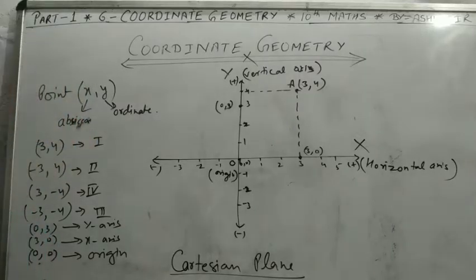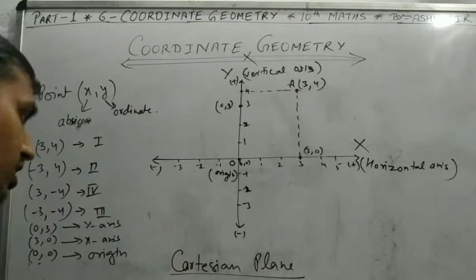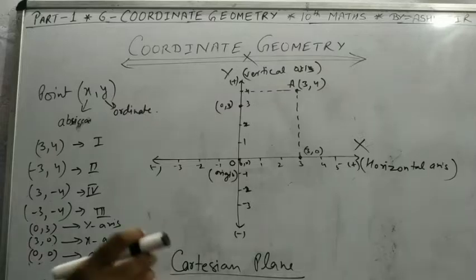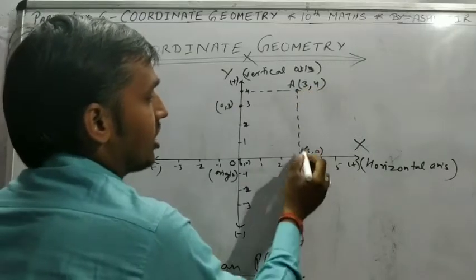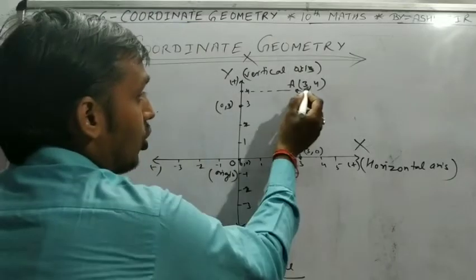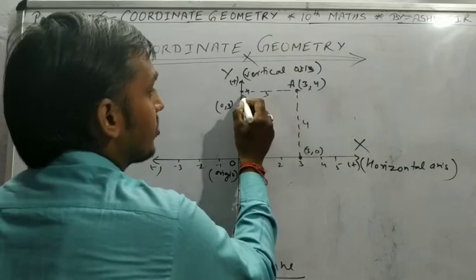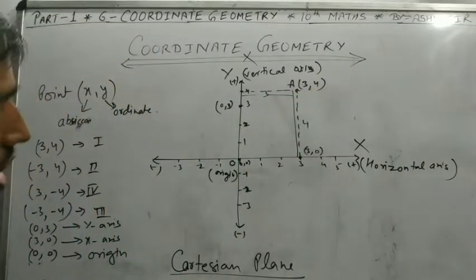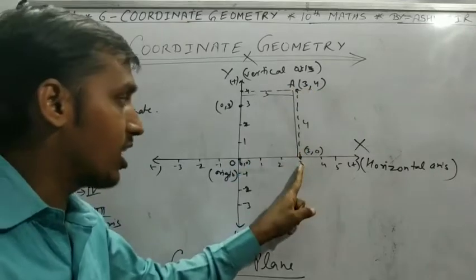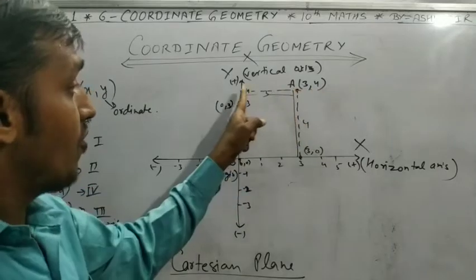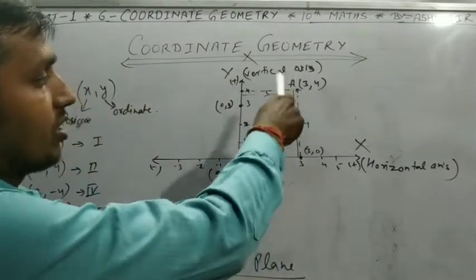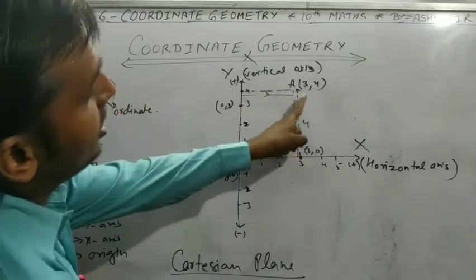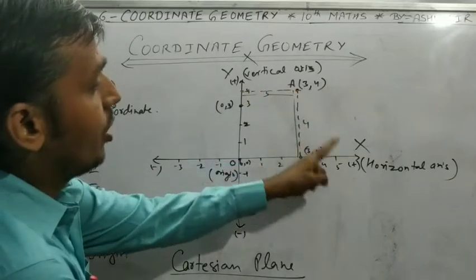In class 9, you plot points and find locations using the same sign conventions. These are also used in class 10. For the point (3, 4): the distance from the x-axis is 4 (the value of y), and the distance from the y-axis is 3 (the value of x). So the distance from the x-axis equals the y-coordinate, and the distance from the y-axis equals the x-coordinate.